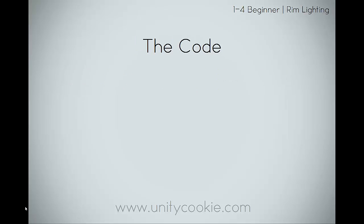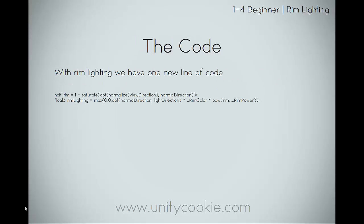Let's take a quick look at the code. With rim lighting we only have two lines of code — you could actually fit this into one line, but I like to break it down into two. We have the half rim to calculate the half vector, and we have the rim lighting itself.